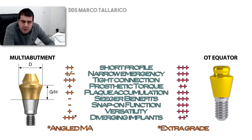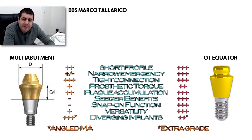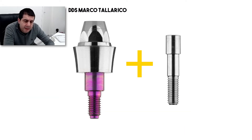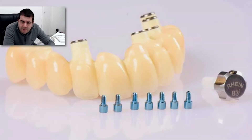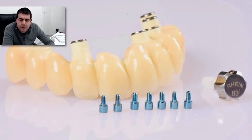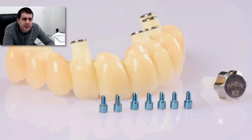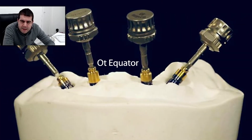The primary insertion torque force is similar in both solutions. The difference is with the secondary screw: the OT equator allows reaching 25 N of force, while the standard abutment normally counts on 15 to 20 N. This is possible due to the larger dimension of the OT equator's secondary screw, which is more resistant and offers additional safety in screwing the prosthesis.